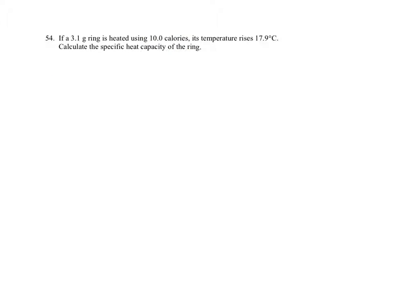So we have one more, number 54. It says if a 3.1 gram ring, there's your mass, is heated using 10 calories. So now we have a different thing here. It's heated using 10 calories. It's actually giving me my E. So I have my mass here, and I have my E. So it's going to be a little bit different of a problem. Temperature rises 17.9 degrees. Again, you don't have a final minus initial here. It doesn't give you a final. It doesn't give you an initial. It just gives you the change. That's okay. So instead of having to subtract like you've been doing, you just have the change right there.